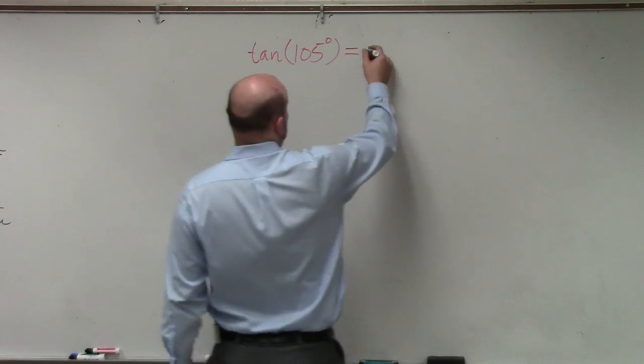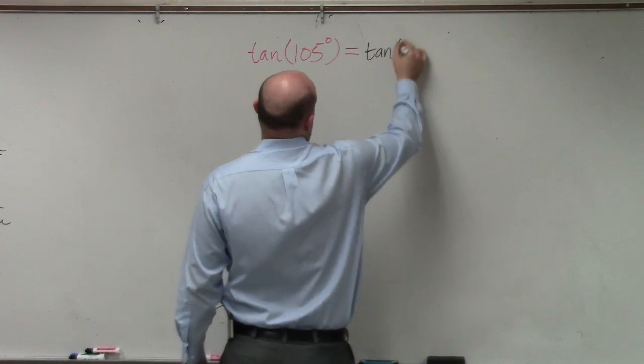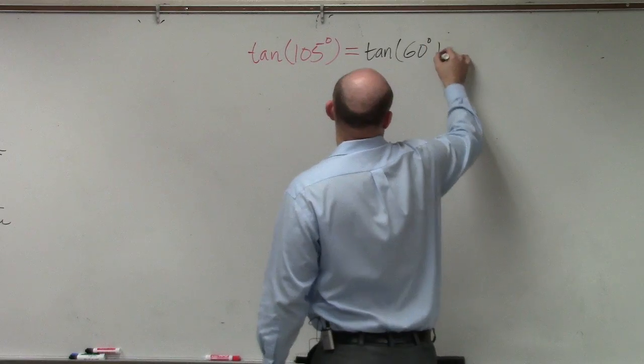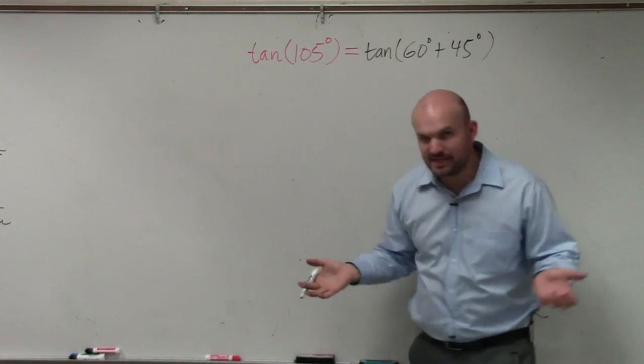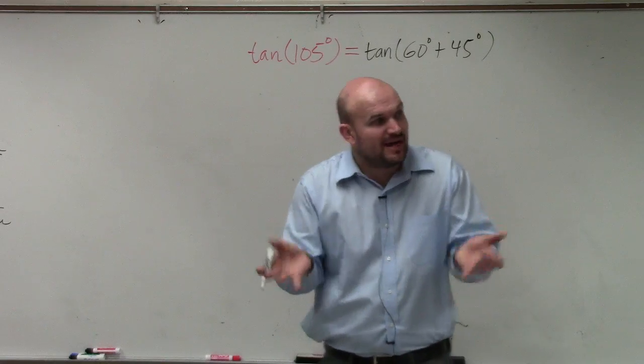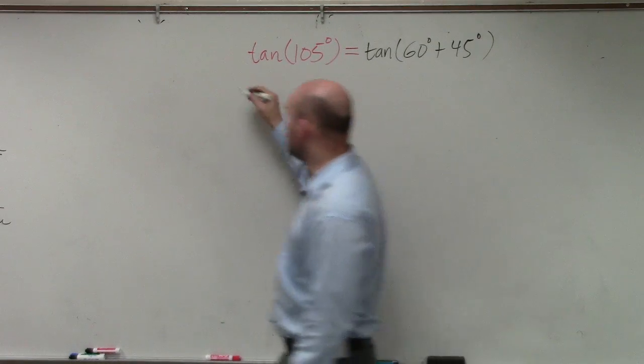In this case, we can see that the tangent, I can break this up into 60 degrees plus 45 degrees. Since I can break up the tangent of 105 degrees into the sum of two angles, I'm going to want to use the tangent formula.